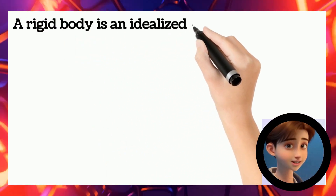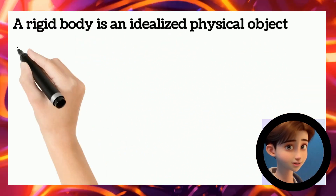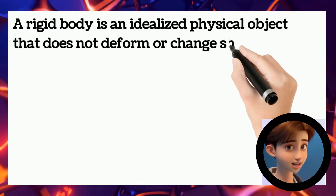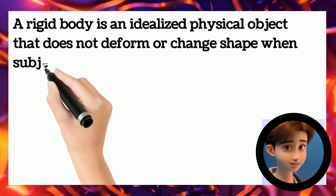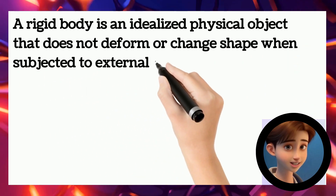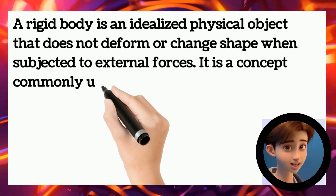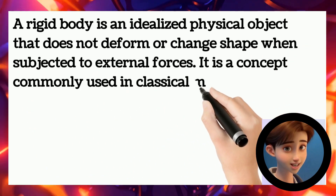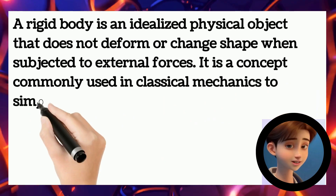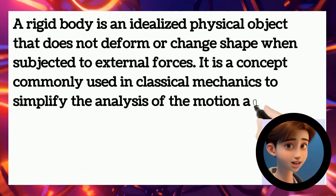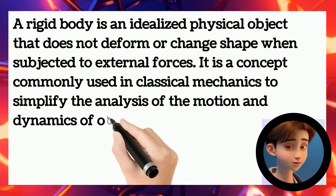A rigid body is an idealized physical object that does not deform or change shape when subjected to external forces. It is a concept commonly used in classical mechanics to simplify the analysis of the motion and dynamics of objects.